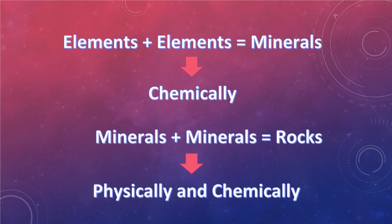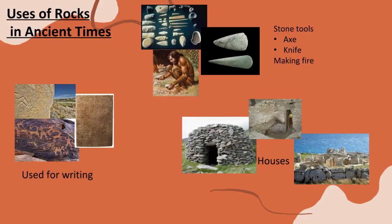They help us develop new technologies and are used in our everyday lives. Our use of rocks and minerals includes building material, cosmetics, cars, roads, and appliances. One of the uses of these rocks in ancient times was as stone tools good for hunting, like creating spears, daggers, and knives, and also as handy materials used to create fire. Some of these rocks were also used for writing on stone tablets and walls that described the community in the past. More of these were used in building houses and other infrastructure.